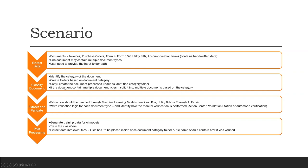Also, if the document has multiple types, it needs to split the document and copy each part into its respective folder. For example, if you have a document where the first page is an invoice and the second page is a purchase order, that document must be split. The first page goes into the invoices folder and the second page goes into the purchase order folder.